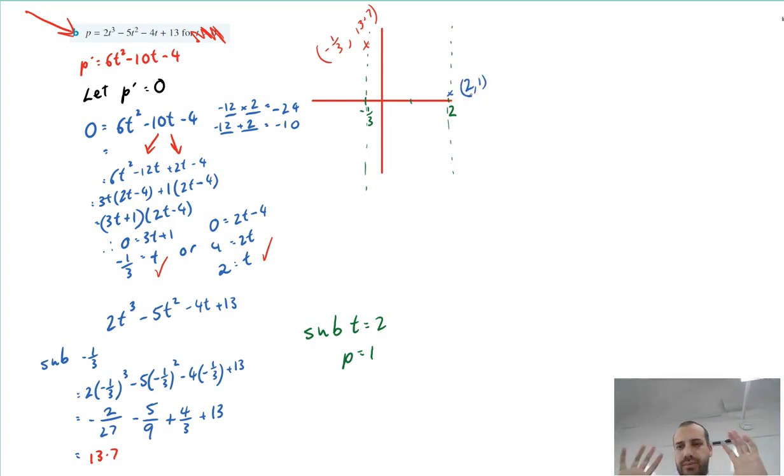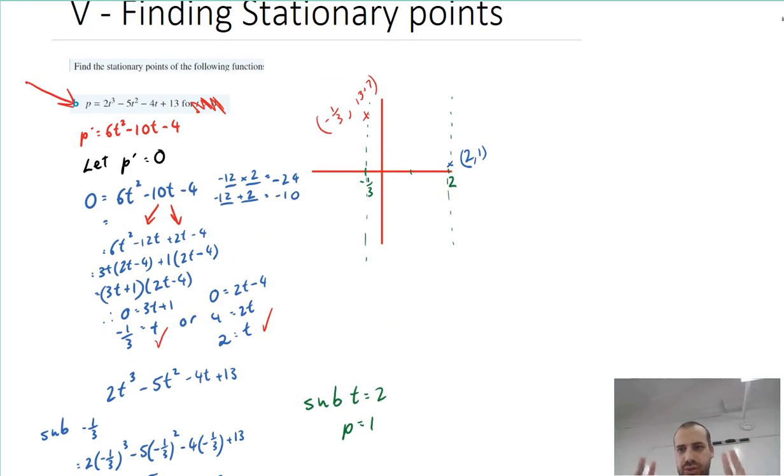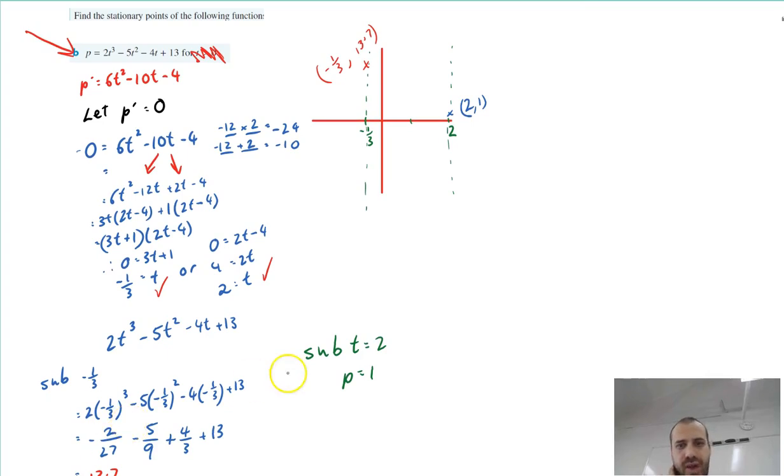So that's the whole thing. That's what I've done. I found two stationary points of that equation. The way that I did it was finding the derivative, letting the derivative equal zero, solving using the quadratic formula or factorizing or completing the square, and then subbing those values back in to find the y-coordinate or in this case the p-coordinate.